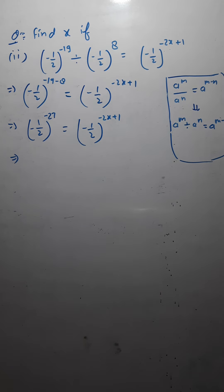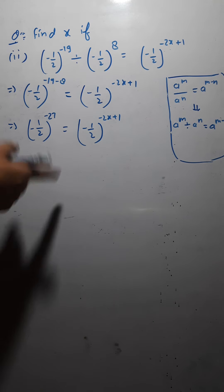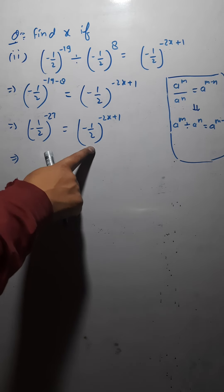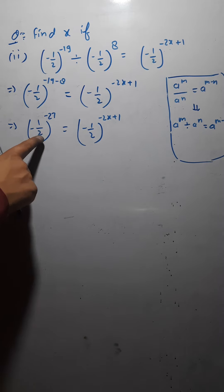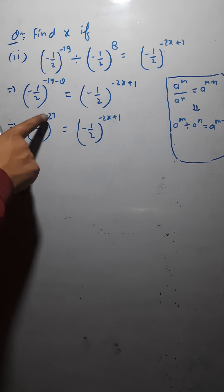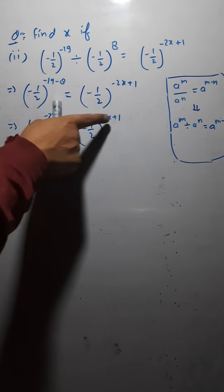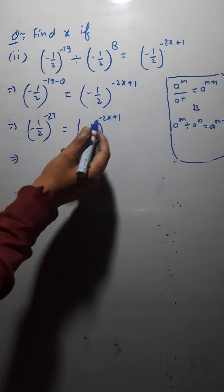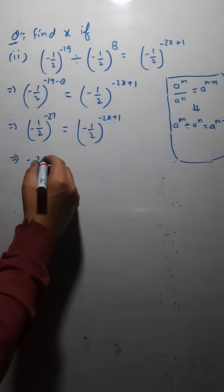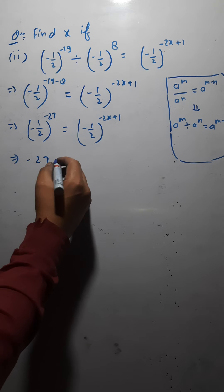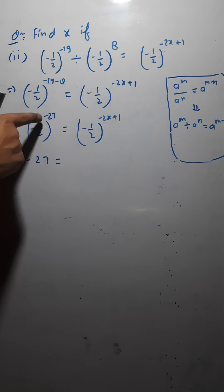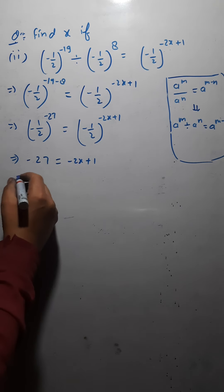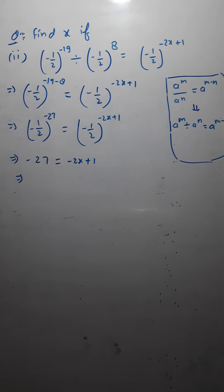Now, since the bases are same, we can equate the exponents. So minus 27 equals minus 2x plus 1. From here I need to find the value of x.